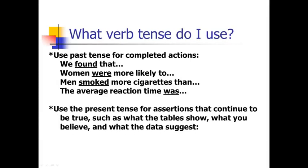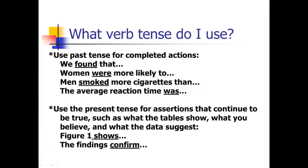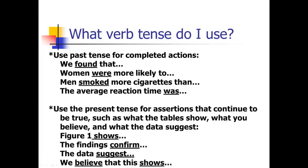However, use the present tense for things that continue to be true when your reader reads the paper. If you say 'table one shows something,' that's present tense because the table is still showing that when the reader reads the paper. 'What the data suggest' — that's still true when your reader reads the paper, it's not a completed action. So you'd say 'figure one shows' because it's still showing it, 'the findings confirm' because they're still confirming it, 'the data suggests' because the data still suggests that — ongoing and true at the time the reader reads the paper.